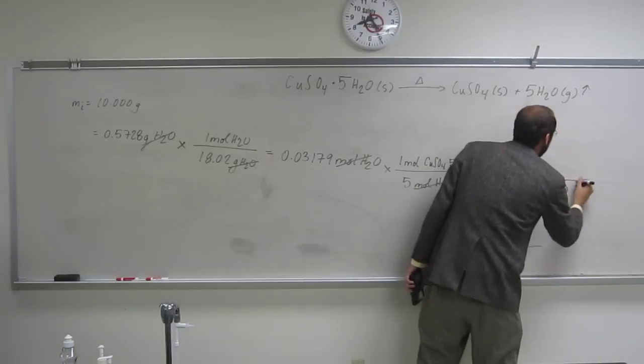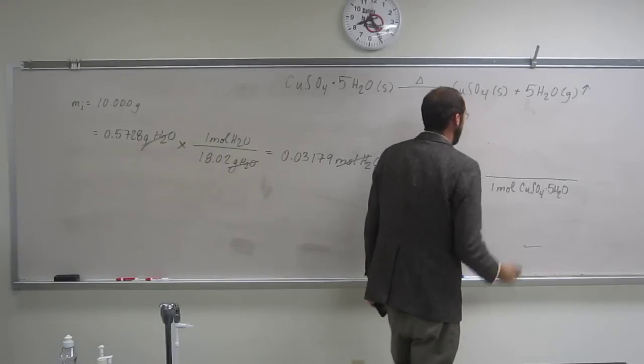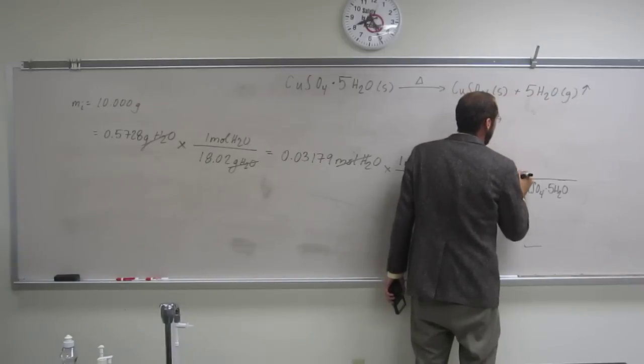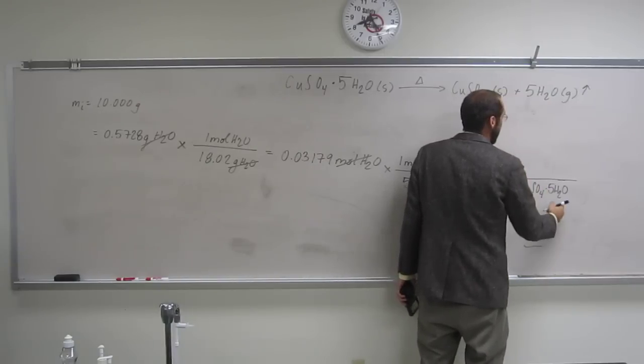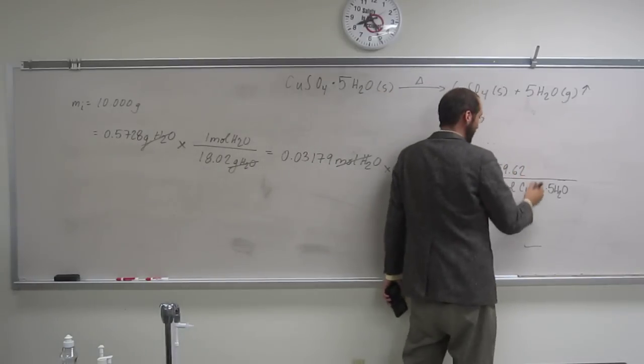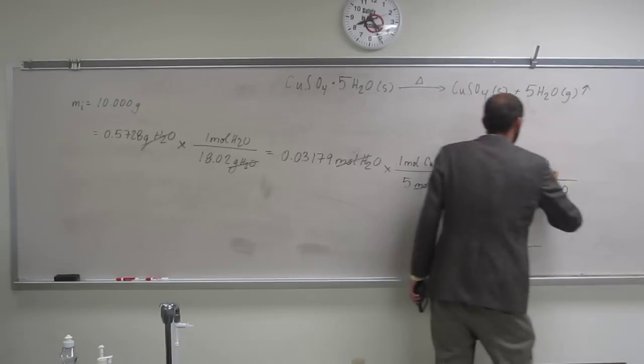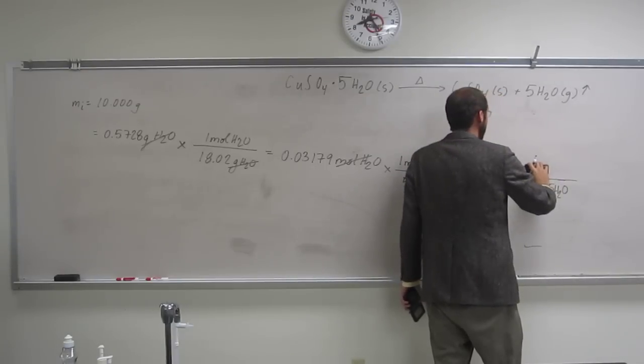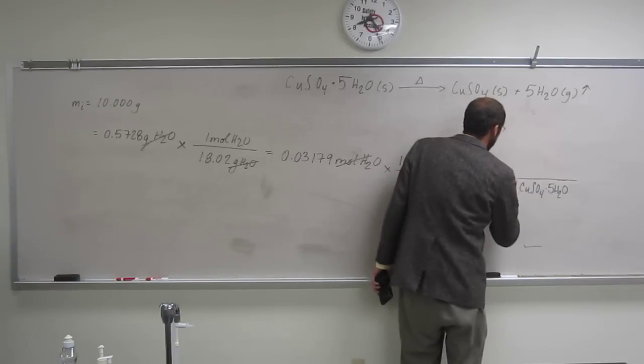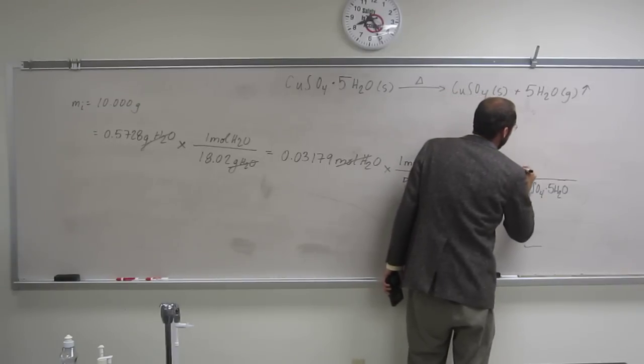So, has anybody calculated this? Yeah, 159.62. And that's with the waters on it? Oh, wait. No, no. It gives it to you on that sheet. It's 249.55. 249 point 5. Yeah.